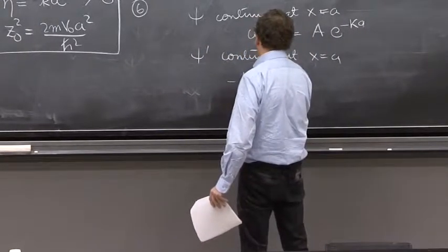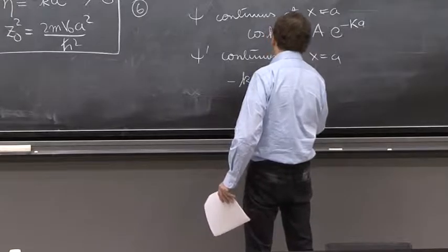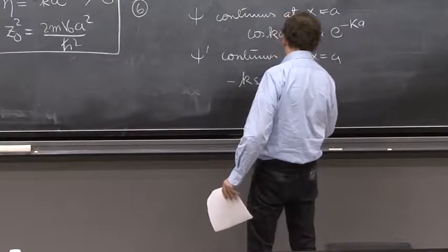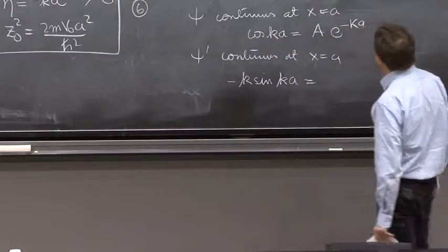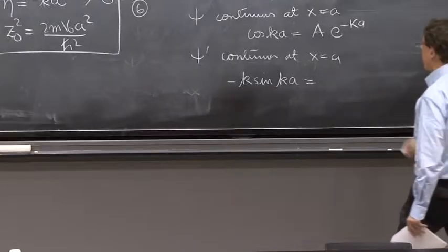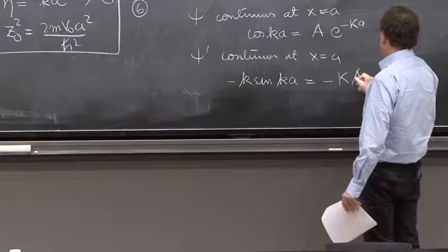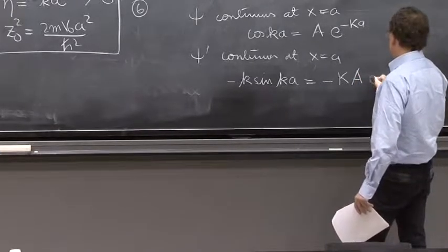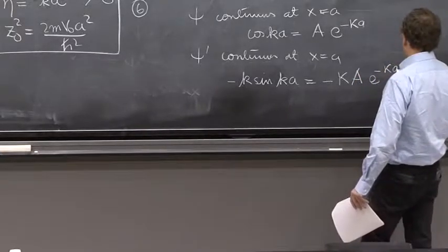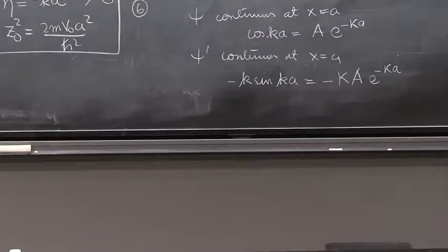So minus k sine of ka is equal to the derivative of that one, which is minus κA e to the minus κa. Two equations.